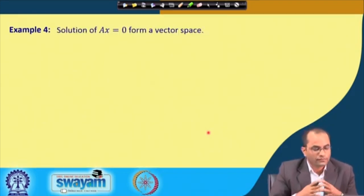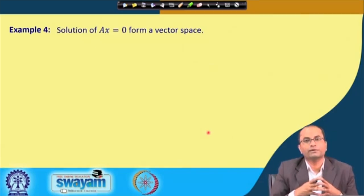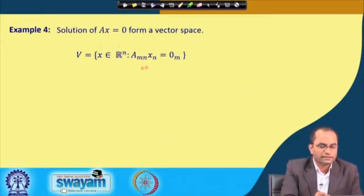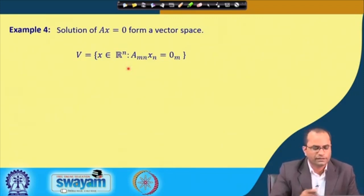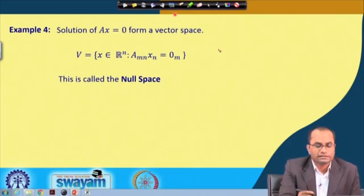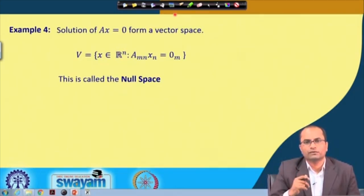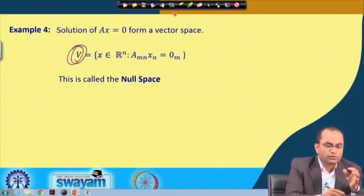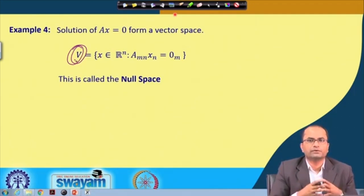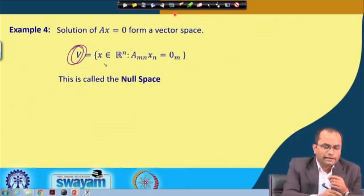Another very important example from the system of linear equations: the solution set of Ax = 0 forms a vector space. We take the set V = {x ∈ R^n : Ax = 0}, which was discussed at the very beginning of today's lecture. This is called the null space. The closure properties are satisfied, and the elements are from R^n, which is already a vector space — so naturally all other properties are satisfied automatically.